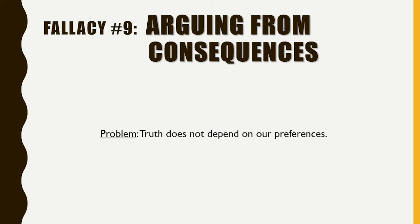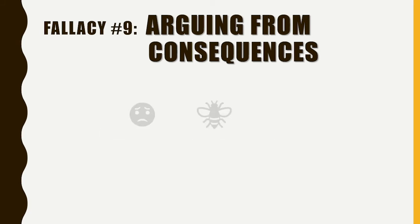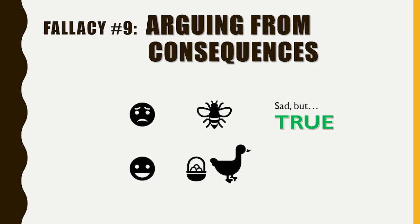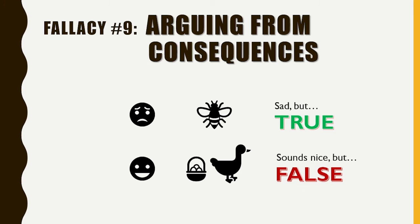Something may be true even if it has consequences we don't like, and something may not be true even if it has consequences that we do like. You might not like that bees sting, but that doesn't mean that they don't. A goose that laid golden eggs might be great for your bank account, but that doesn't mean that geese can lay golden eggs.